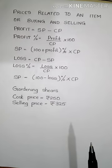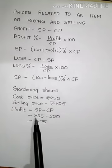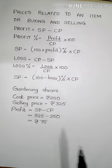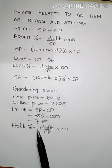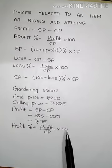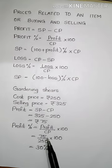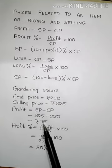Let us see what is the profit. Profit is selling price minus cost price, so 325 minus 250 — your profit is Rs. 75. You also have to calculate profit percentage. Profit percentage is equal to profit by cost price into 100. After substituting the values, you get 75 by 250 into 100, and the final answer is 30%. That means profit is Rs. 75 and profit percentage is 30%.